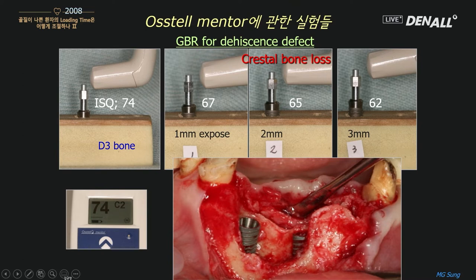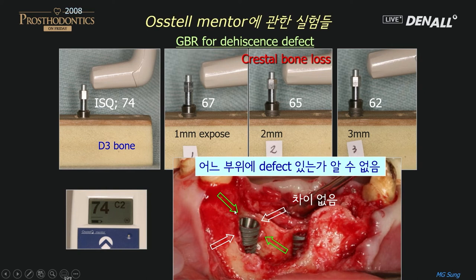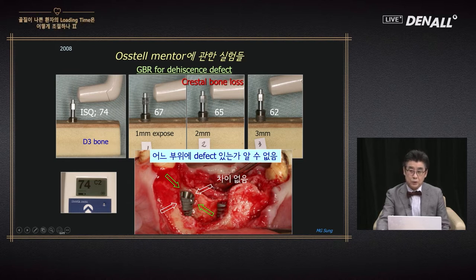So when to place the prostodontics, I would know. A value of 74 is rather low — this is because we did it with D3 bone. I started the test with D2 bone, but in that situation it is not very meaningful since D2 gives rather high numbers. Next I used D3 bone for the experiment. Measuring ISQ value buccolingually and mesiodistally, whatever the direction, there is no significant difference. Even where there is a large defect on one side and solid attachment on the other, the difference was not significant. So you cannot know the direction of the defect from ISQ alone.